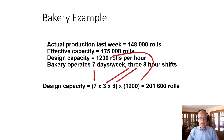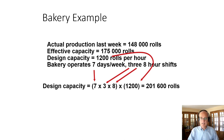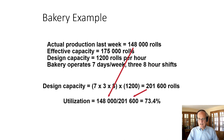Let's look at an example. Actual production last week was 148,000 rolls. Effective capacity is 175,000 rolls. Design capacity is 1,200 rolls per hour. The bakery operates seven days per week, three eight-hour shifts. So design capacity is 7 days × 3 shifts × 8 hours × 1,200 per hour = 201,600 rolls. Our utilization is 148,000 ÷ 201,600, which is just over 73% utilization.